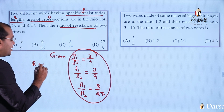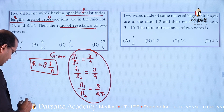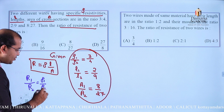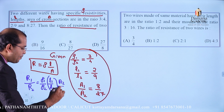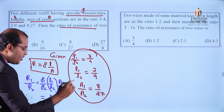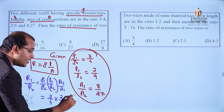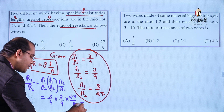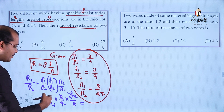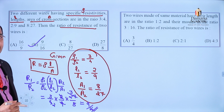Substituting the values: R1/R2 equals (3/4) × (2/9) × (27/8). Simplifying: 27/9 equals 3, and 2/4 equals 1/2, giving (3/2) × 3 divided by 8, which equals 9 divided by 16. So the correct answer is R1:R2 equals 9:16.